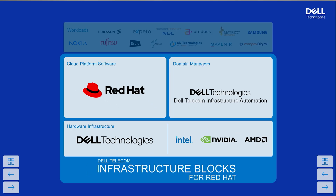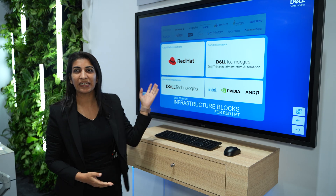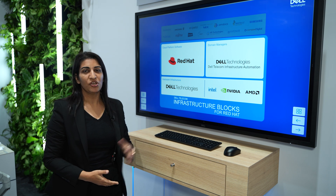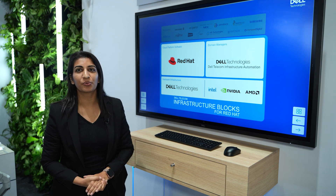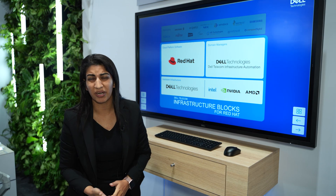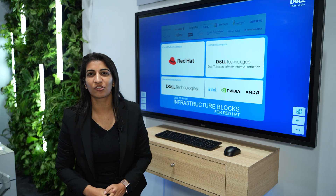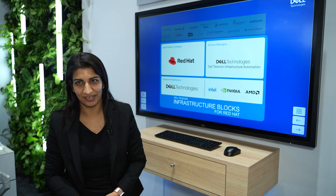Dell Telecom Infrastructure Block for Red Hat today has an infrastructure layer which consists of Dell servers. Then we have a domain manager, that is Dell Telecom Infrastructure Automation Suite, which takes care of all the automation — basically hardware automation. And then we have Red Hat, which is a leading cloud platform partner. We have partnered with Red Hat to do the deployment and build a cloud-native disaggregated platform for seamless deployment and faster time to market. And one benefit you get is it's all backed by one unified call support system — that is Dell.